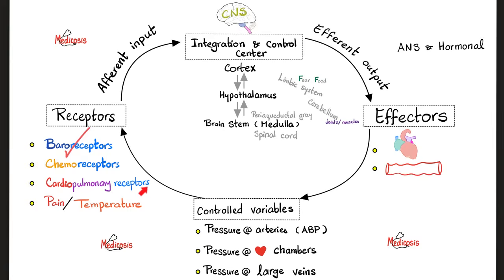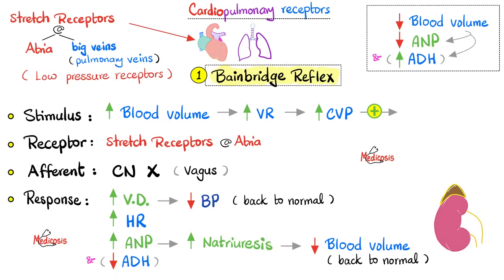Now we turn our attention to the cardiopulmonary receptors, such as the Bainbridge reflex and the Bezold-Jarisch reflex. Starting with the Bainbridge reflex: you start with high blood volume for whatever reason — perhaps too much normal saline or salt solutions were administered. This increase in blood volume increases venous return, otherwise known as right ventricular end-diastolic volume, which increases central venous pressure — the pressure in the right atrium, which receives the superior vena cava, inferior vena cava, and coronary sinus. We will stretch the atrium more.